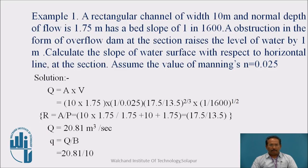The first example: a rectangular channel of width 10 meter and normal depth of flow is 1.75 meter, has a bed slope 1 in 1600. Obstruction in the form of overflow dam at the section raises the level of water by 1 meter. Calculate the slope of water surface with respect to horizontal line. Assume the Manning's coefficient as 0.025.